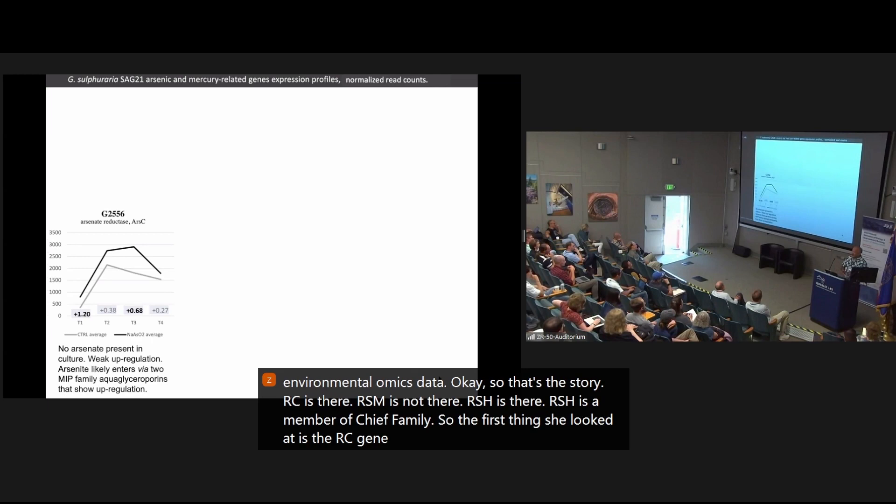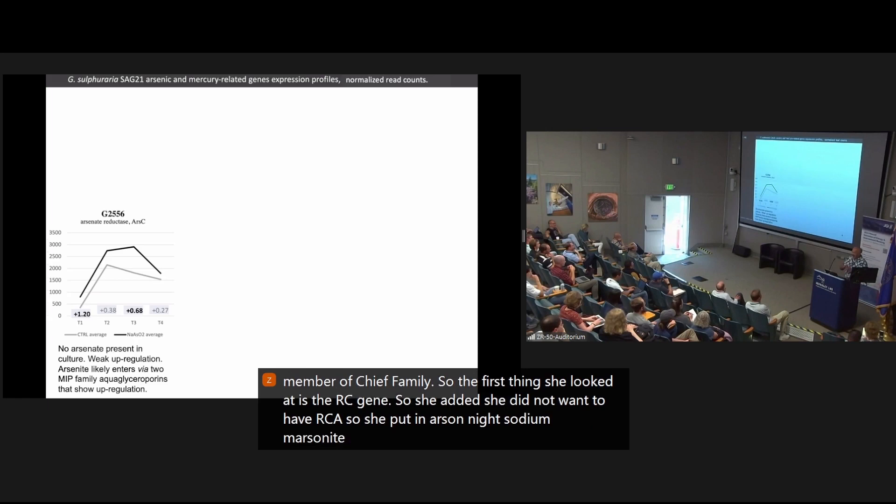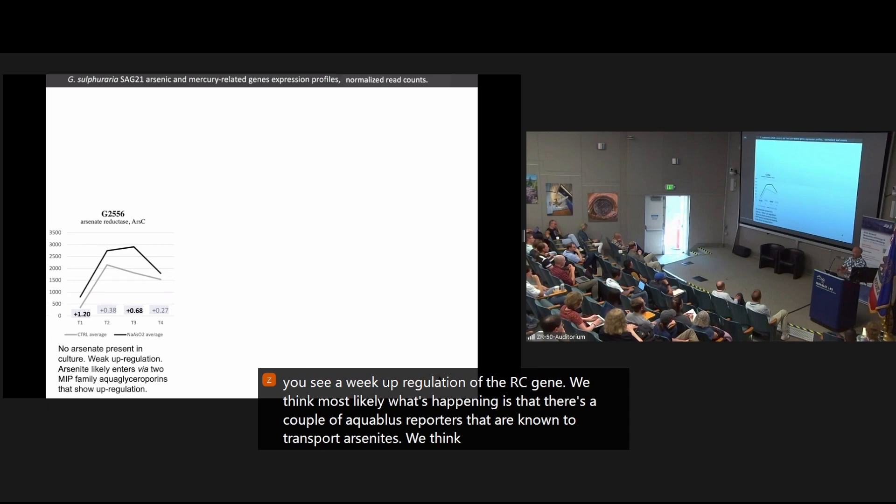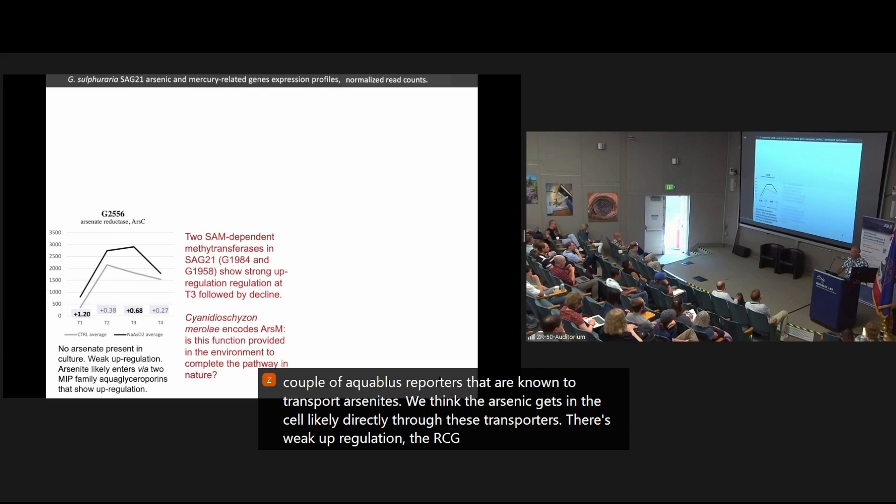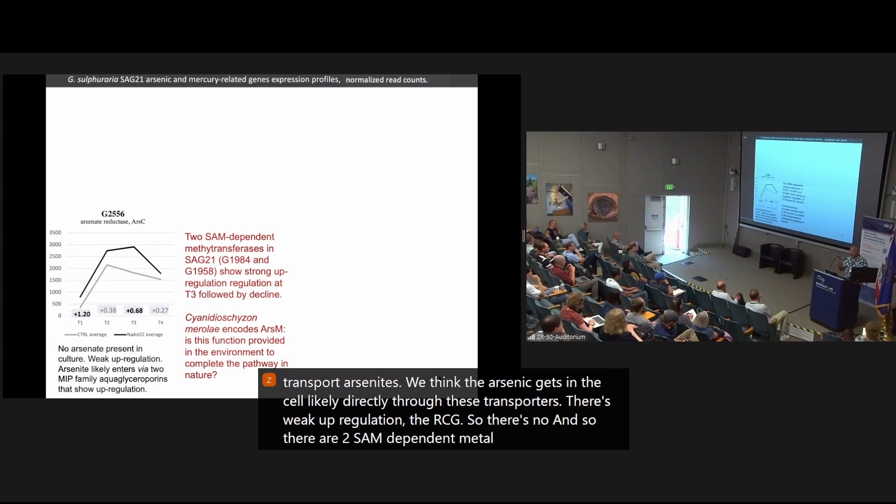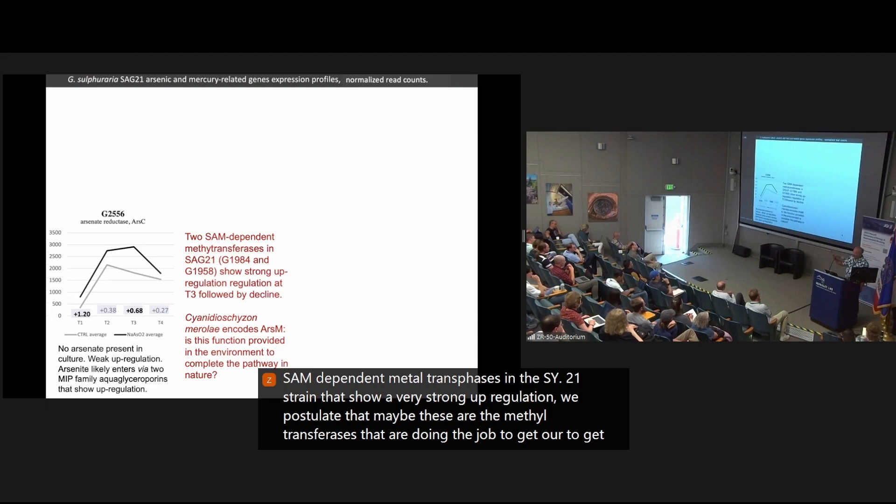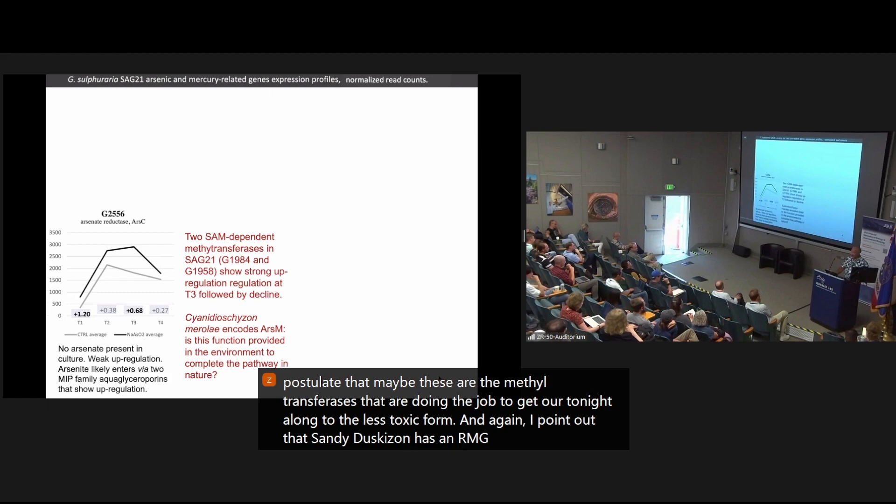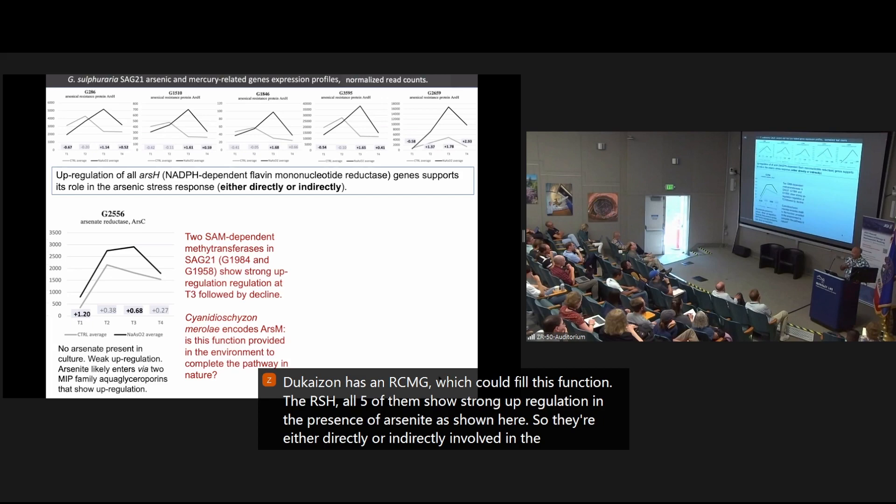Okay, so that's the story. ArsC is there. ArsM is not there. ArsH is there. ArsH is a member of the gene family. So the first thing she looked at is the ArsC gene. So she added, she did not want to handle arsenite, so she put in arsenate, sodium arsenate. So you see a weak upregulation of the ArsC gene. We think most likely what's happening is that there's a couple of aquaglyceroporins that are known to transport arsenite. We think the arsenite gets in the cell, likely directly through these transporters. There's weak upregulation of the ArsC gene. So there's no ArsM gene, and so there are two SAM-dependent methyl transferases in the SAG21 strain that show a very strong upregulation. We postulate that maybe these are the methyl transferases that are doing the job to get arsenite along to the less toxic form. And again, I point out that cyanidioschizon has an ArsM gene, which could fill this function. The ArsH, all five of them show strong upregulation in the presence of arsenate as shown here. So they're either directly or indirectly involved in the resistance to sodium arsenate and its forms within the cell.